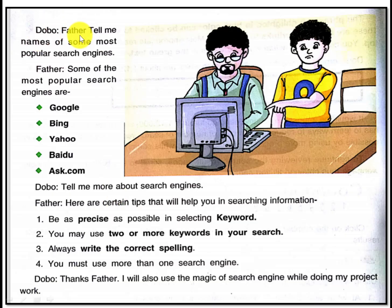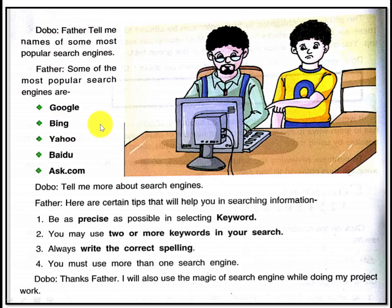Dobo asks: father, tell me the names of some popular search engines. Father says: Google is a search engine, Bing is also a search engine, Yahoo is also a search engine, Baidu, and Ask.com — these are all search engines.